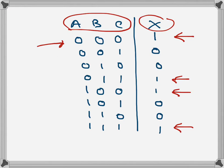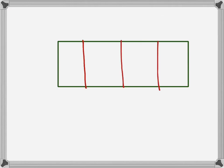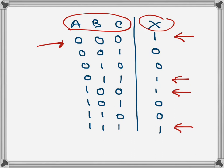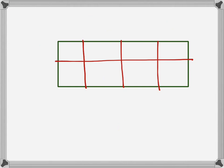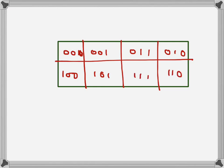Each cell will correspond to each of the input states. So here is the three-variable K-map with eight cells. Each cell corresponds to one input state. It goes like this: the first is 0-0-0, then 0-0-1, then 0-1-0, 0-1-1, then 1-0-0, 1-0-1, 1-1-0, and finally 1-1-1.